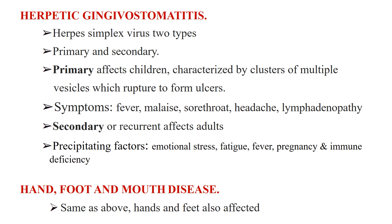Secondary or recurrent herpes chiefly affects adults. It is milder as adults have stronger immunity and have sometimes been immunized to this virus. Most commonly it involves the vermilion border of the lip, but less often lesions appear intraorally on the hard palate and gingiva. Precipitating factors include emotional stress, fatigue, fever, pregnancy, or immune deficiency states. Treatment is mostly symptomatic and antiviral therapy can be prescribed.